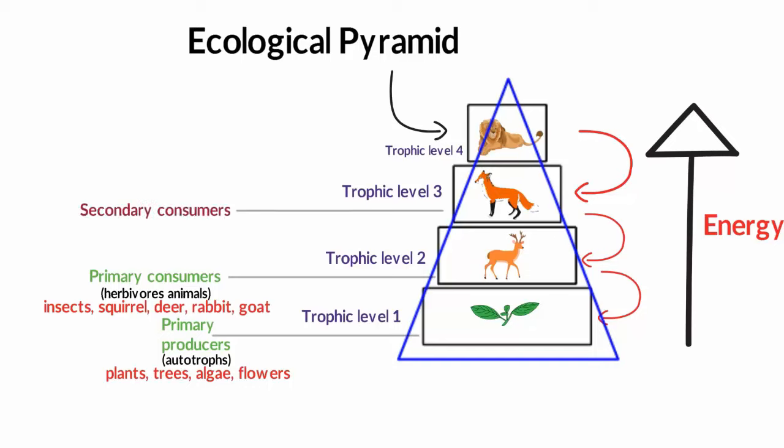we have the secondary consumers, which feed on the primary consumers. Secondary consumers consist of carnivorous animals like fox, snakes, wolves, crocodiles, eagles, etc. Like this, the bar of the pyramid continues to rise as long as there is an organism that eats another organism.